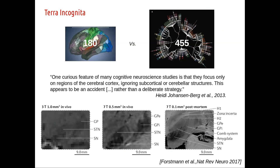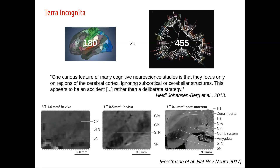But if you look a little more closely at those structures, you can see that even though we don't study them there's a lot of complexity. If you look at anatomical definitions of the subcortex and ask how many structures are there, anatomists have named around 455 structures — while the cortex converges to about 180 to 200 areas. So the complexity of the subcortex is definitely not small compared to that of the cortex.